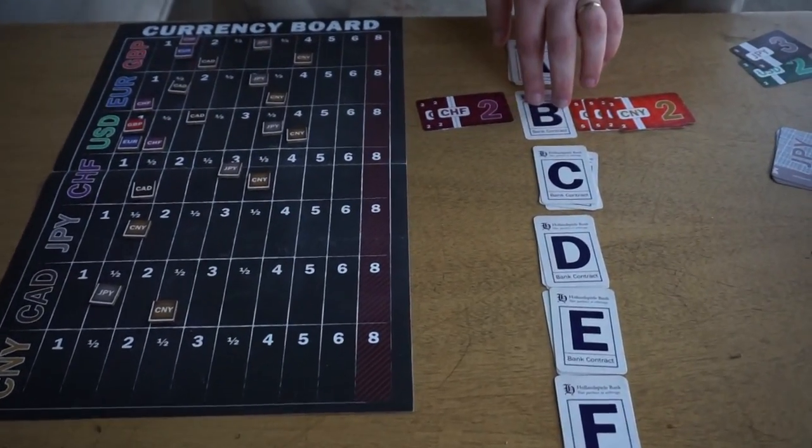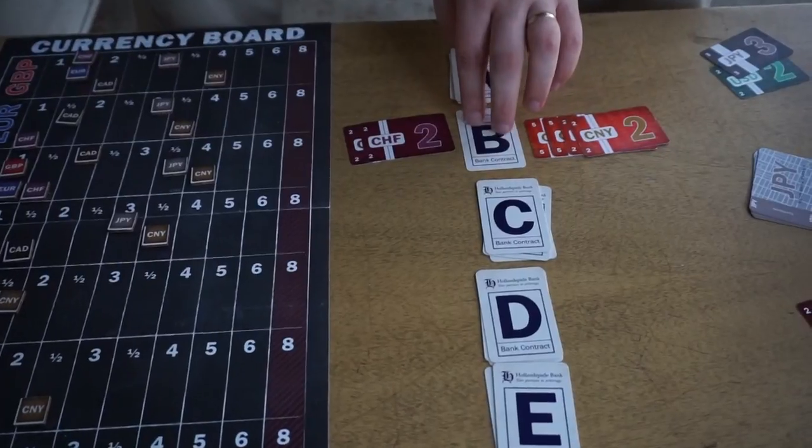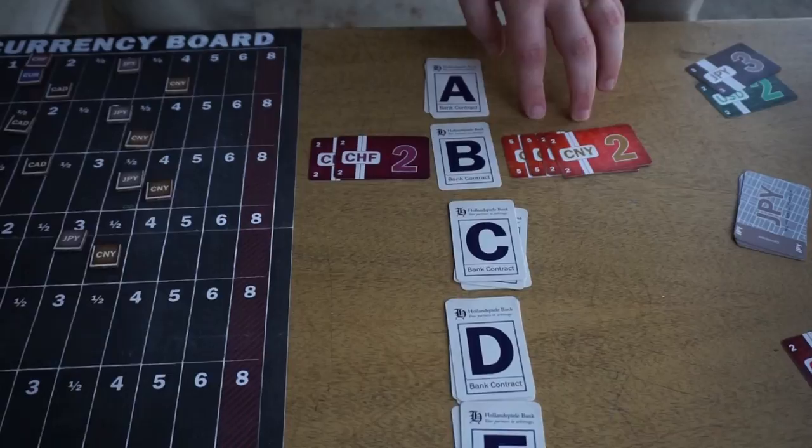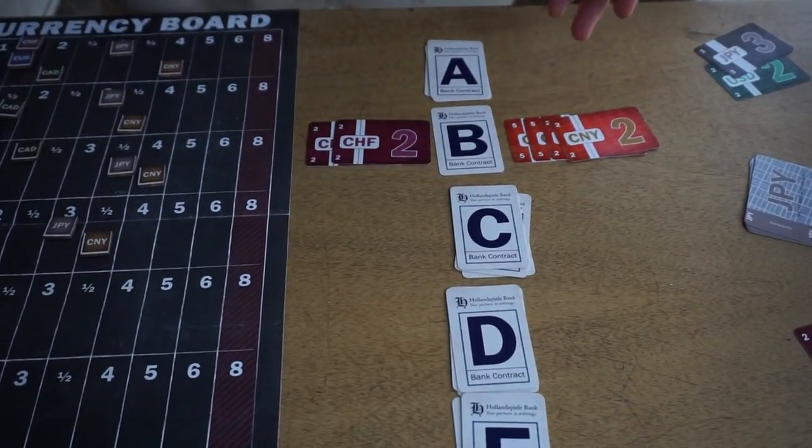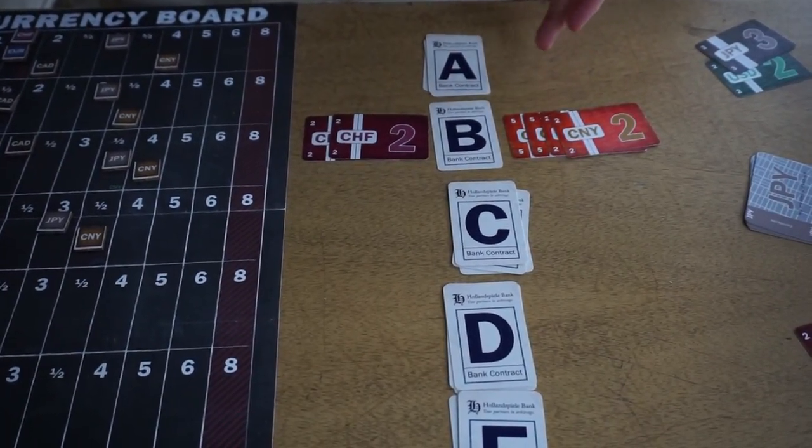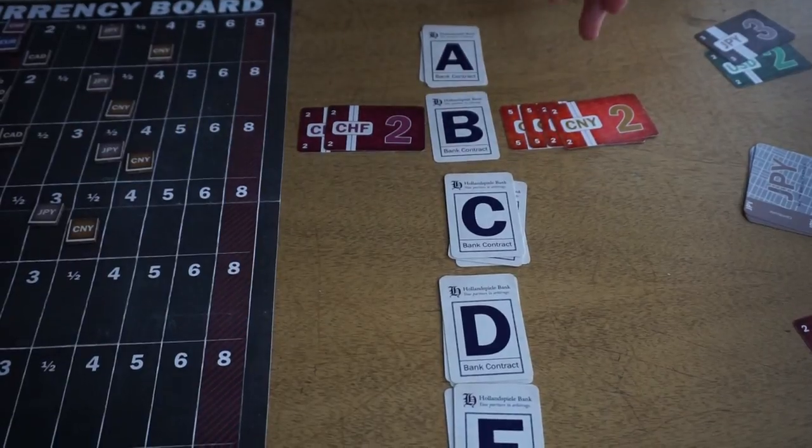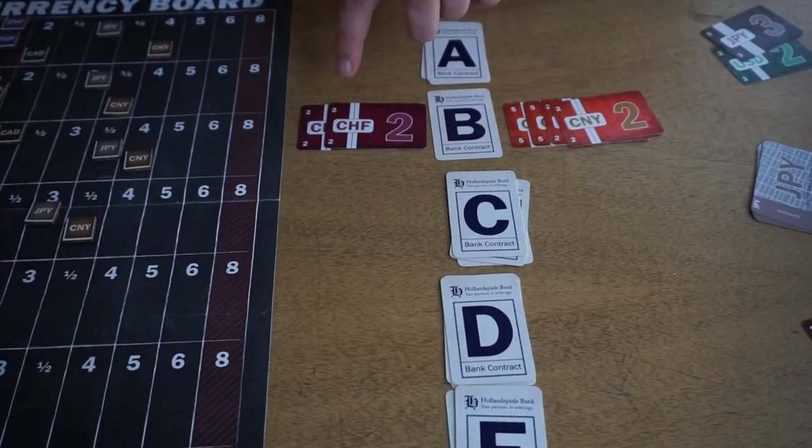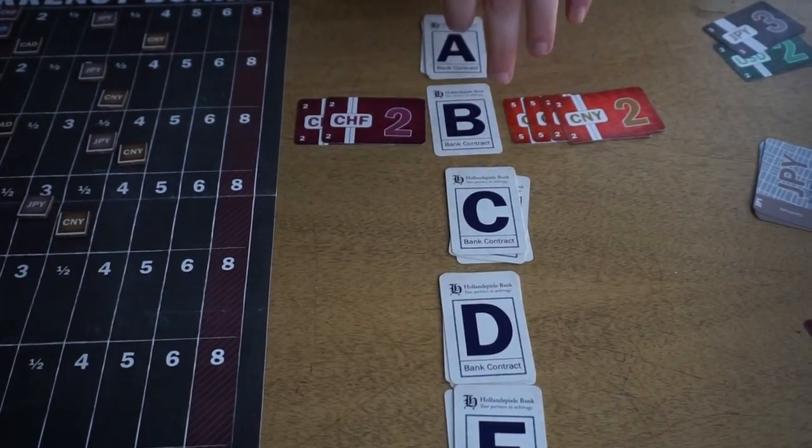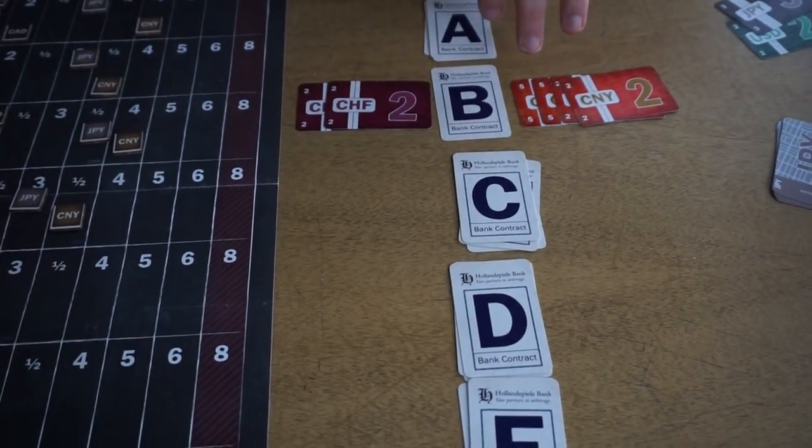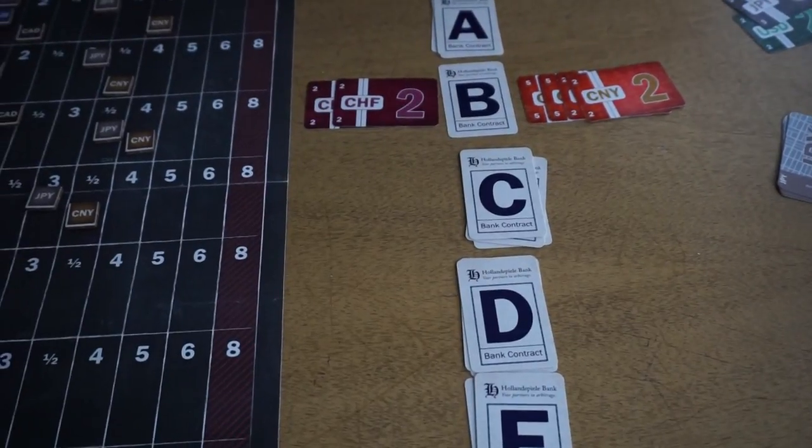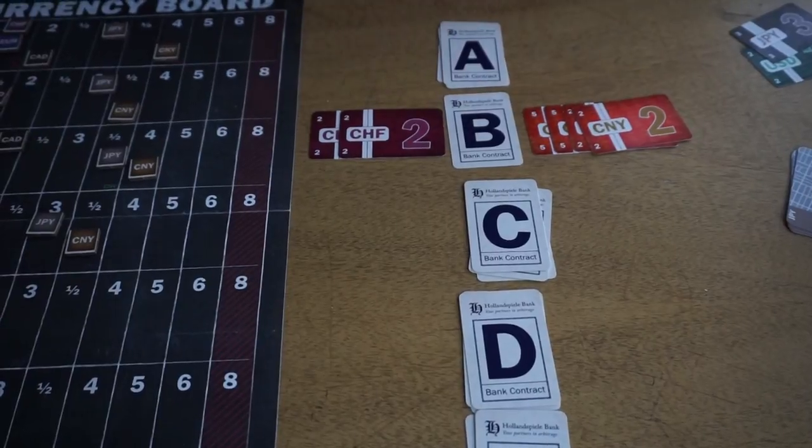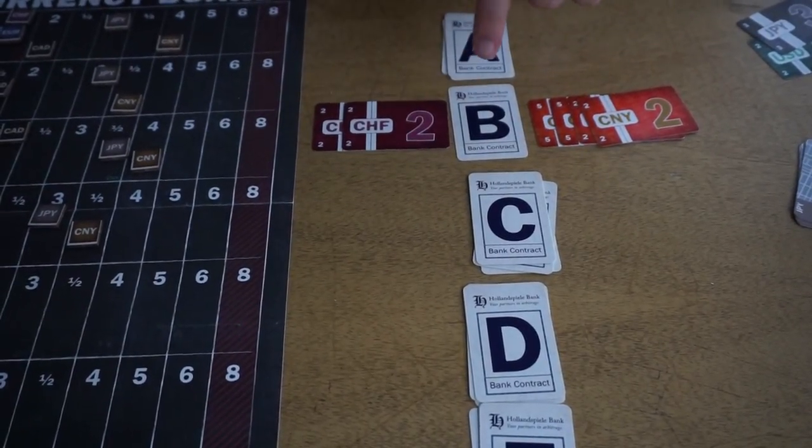Now this contract here that this player made, this contract B, he's promising four CHF for 14 CNY because that was and is the exchange rate, where one CHF will get you three and a half CNY. Now he doesn't have four CHF, he only has two CHF. He can still make this contract, he can still promise money he doesn't have. What happens when it comes up, when the contract is resolved, if he doesn't have that money, then it's gonna be converted to a loan.